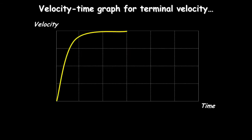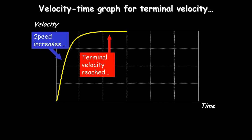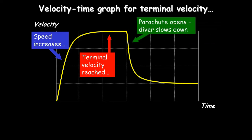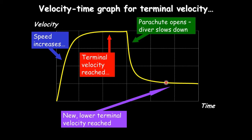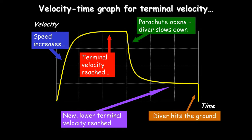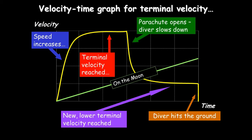On a velocity-time graph of his motion: when he jumps he quickly increases speed in a steady acceleration shown by a straight line, then reaches terminal velocity. When he opens his parachute he slows right down and ends up at a slower terminal velocity, slow enough to land safely. On the moon there is no gravity, so he would just keep accelerating with nothing to slow him down.